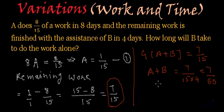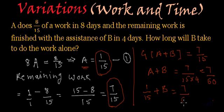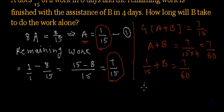And what is the working capacity of A? Working capacity of A is 1 by 15 from equation number 1. Right? So if I substitute that over here we will get 1 by 15 plus B is equal to 7 by 60 or B is equal to 7 by 60 minus 1 by 15.